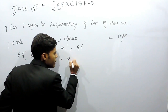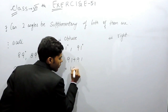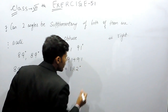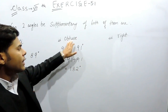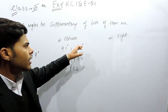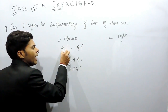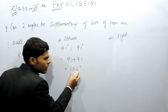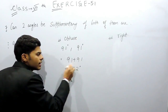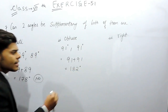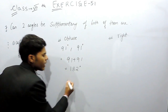We add them: 91 plus 91 equals 182 degrees, which is greater than 180. Since obtuse angles can be anything between greater than 90 and less than 180, any angle greater than 91 degrees will give a sum greater than 182. At no point can the sum be less than or equal to 180 degrees. So two obtuse angles cannot form a supplementary pair.